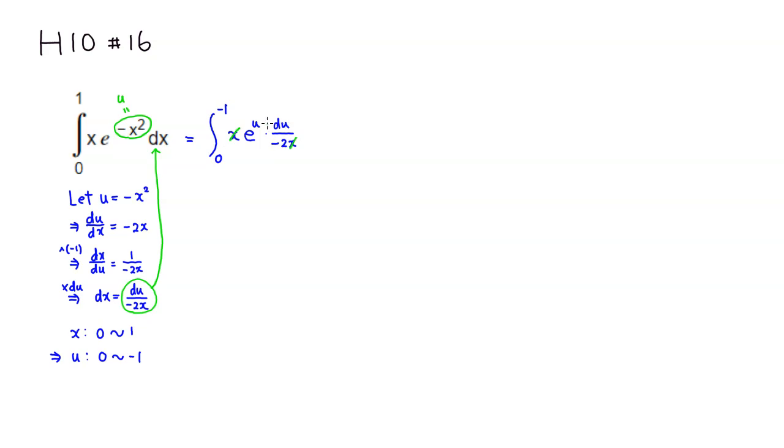And we have 1 over negative 2. Since this is just a number, we can place it right outside. So you have negative 1 over 2, that's just a number, pull it out. And then you're going from 0 to negative 1. Then what's left is e to the u, and another thing we have is du.